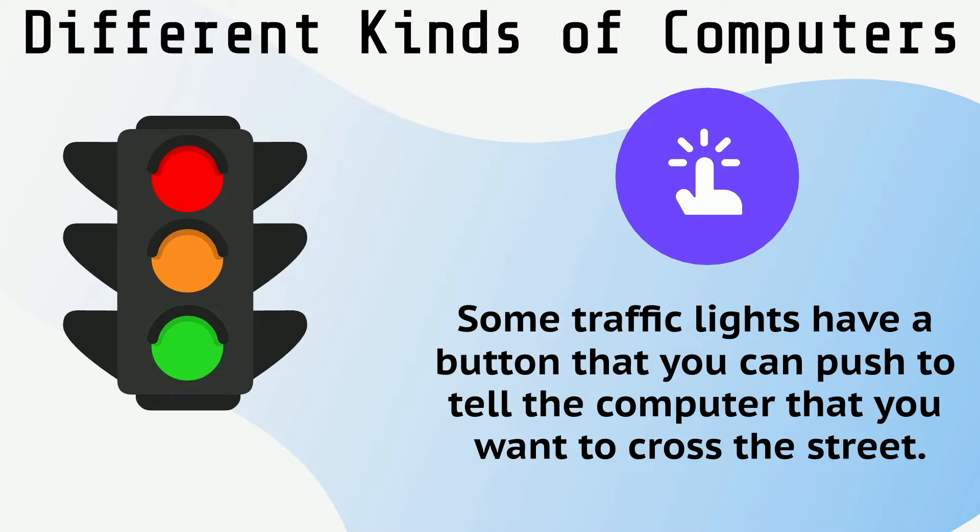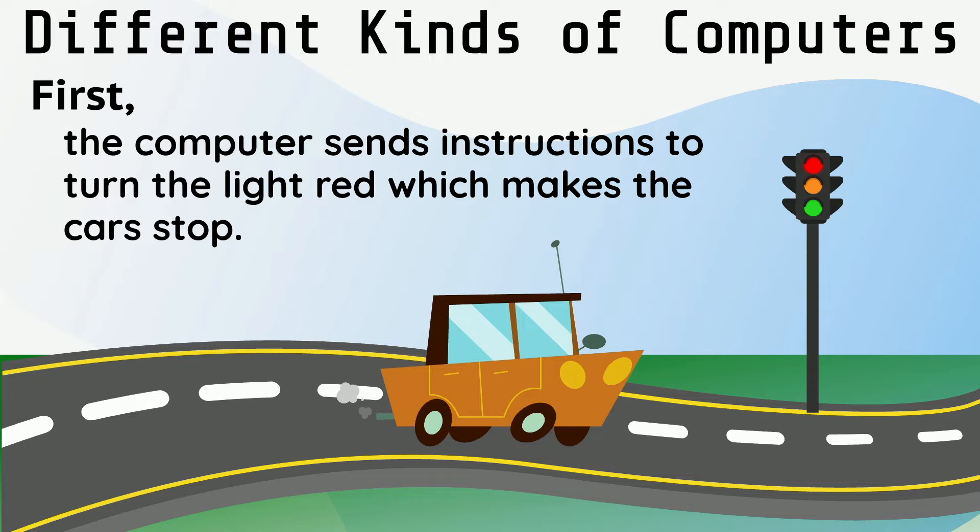First, the computer sends instructions to turn the light red, which makes the cars stop. Then, the computer turns on the light for pedestrians to cross.